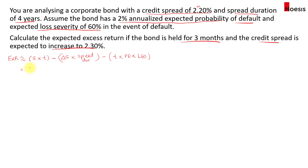The expected loss for the holding period is T times the probability of default times the loss severity or loss given default. Based on this case, the spread is currently 2.2%, multiplied by the holding period of 3 months. T will be 3 over 12 in annualized terms, so that's 0.25. That's the expected return if you hold the bond for 3 months with no default losses and no change in spreads.